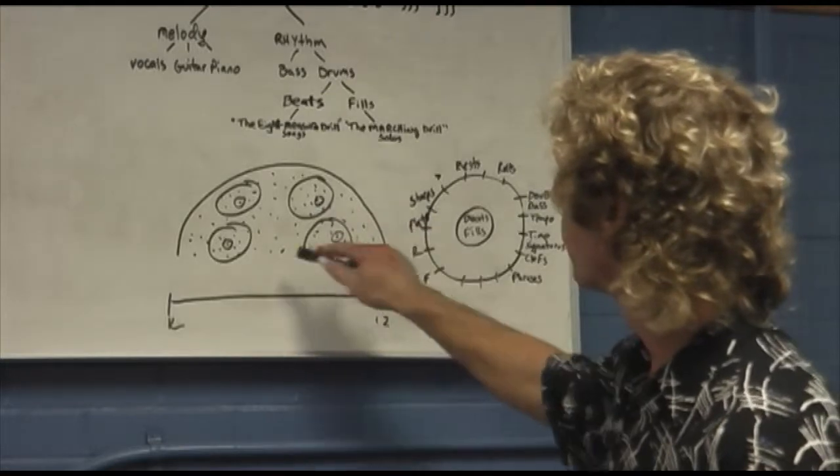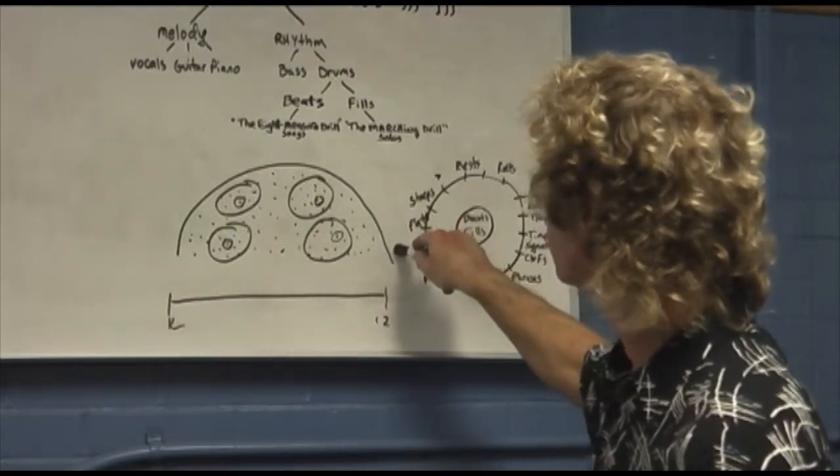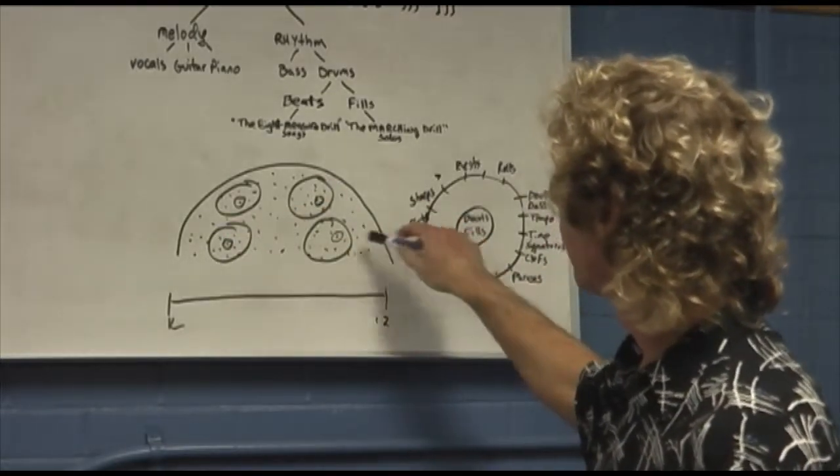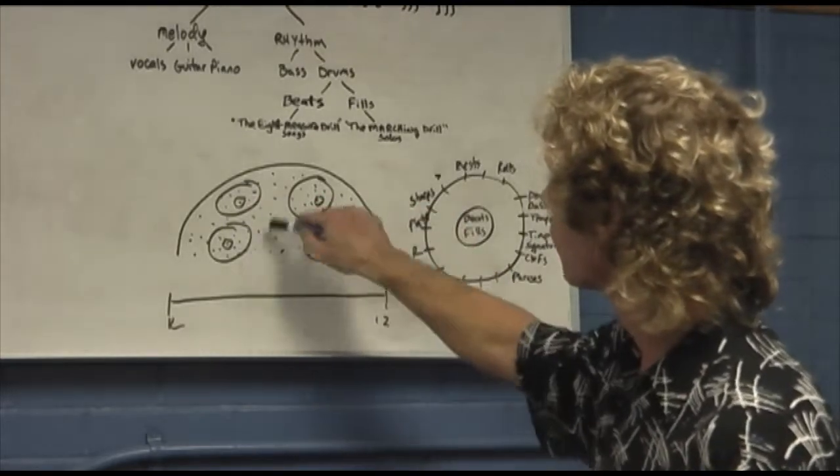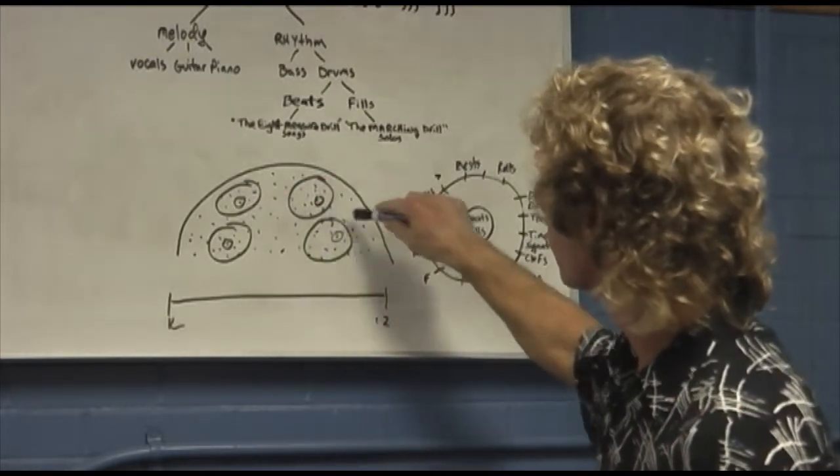He goes, here's how we start. And he drew this diagram for me. He drew this little half circle. He goes, this is the space shuttle looking out. And he drew all these buttons.